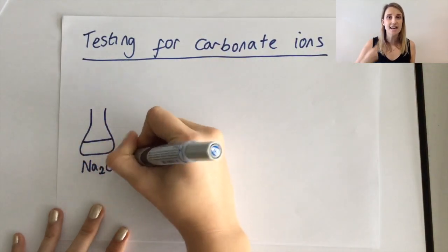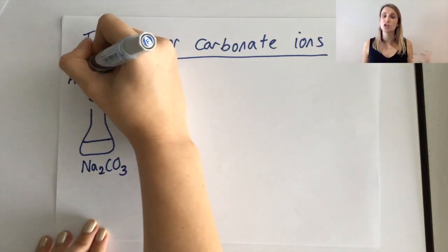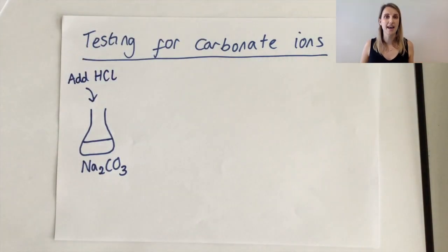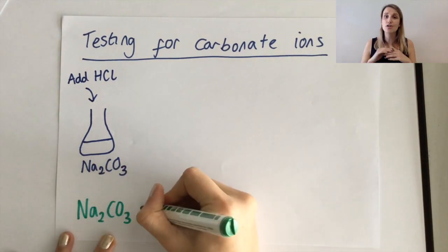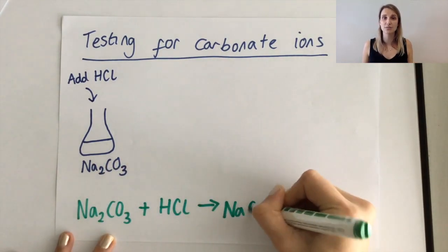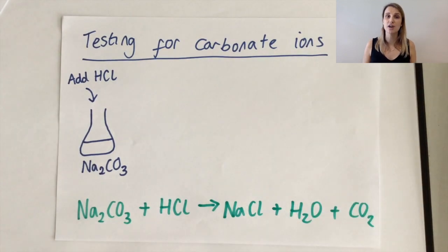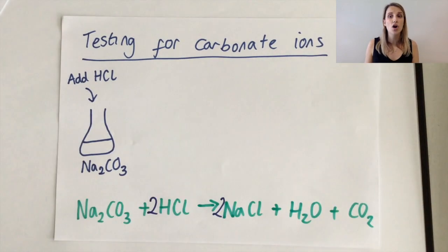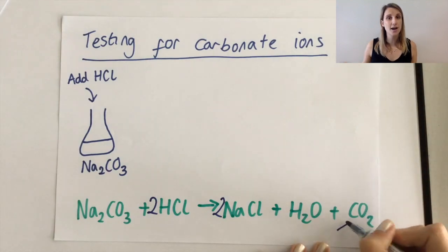The first step is that you add hydrochloric acid to your sample of carbonate ions. The reason for this is that I cannot test carbonate ions directly, but instead what I do is I react my metal carbonate with HCl. Now hopefully what you know is that that will make a salt, water and carbon dioxide.